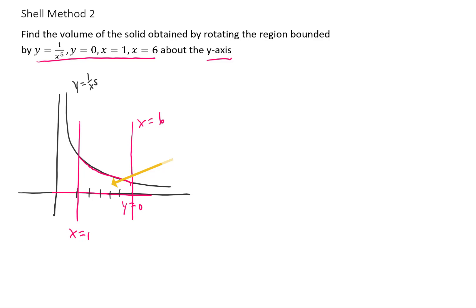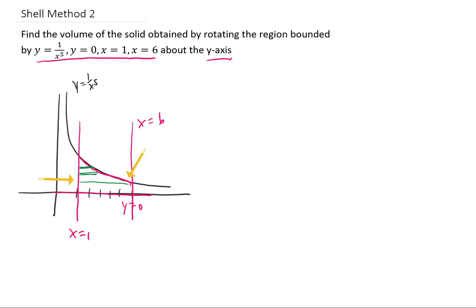Now if we want to rotate this around the y-axis, you'll notice that using the disk or washer method is not very convenient. I actually did a problem like this previously where we had to split up the volume integral into two pieces — one piece where the inner and outer radius were given by these two functions, and another piece where the inner and outer radius were given by these two functions. We don't want to do that in this problem, so we're going to use another method called the shell method.